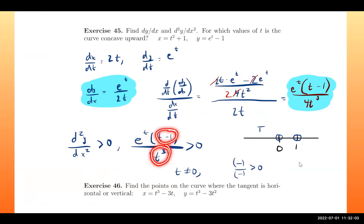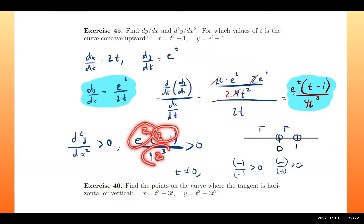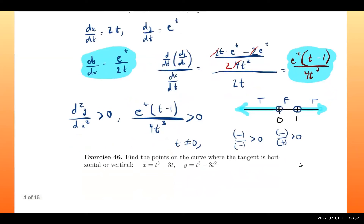Testing t=1/2: e^t is positive, (t−1) is negative, and 4t³ is positive, giving a negative over positive — false. Testing t=2: everything is positive, so the result is positive — true. The curve is concave upward on the intervals where the second derivative is positive.